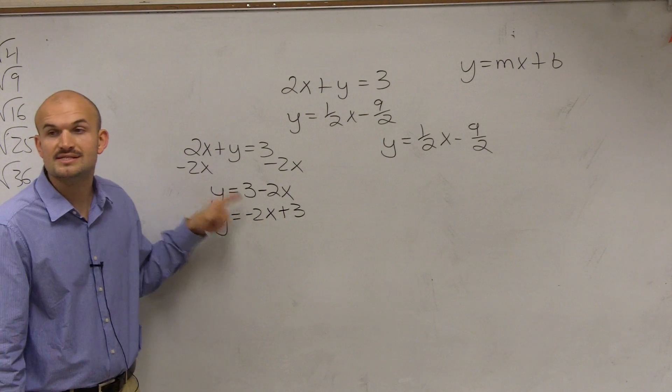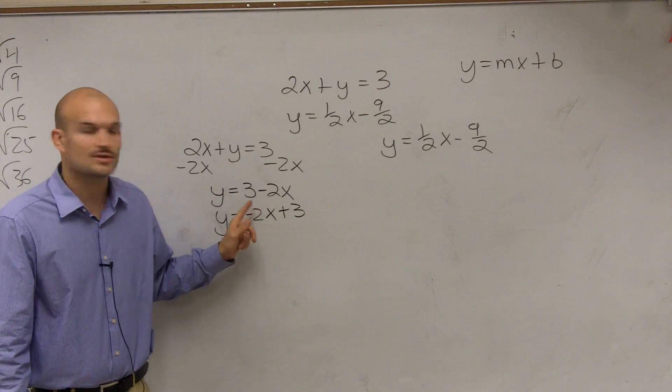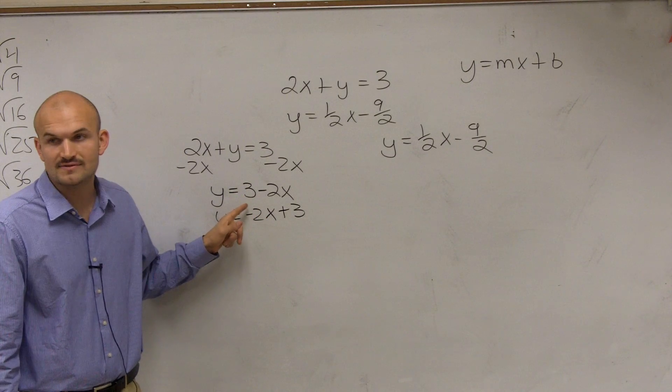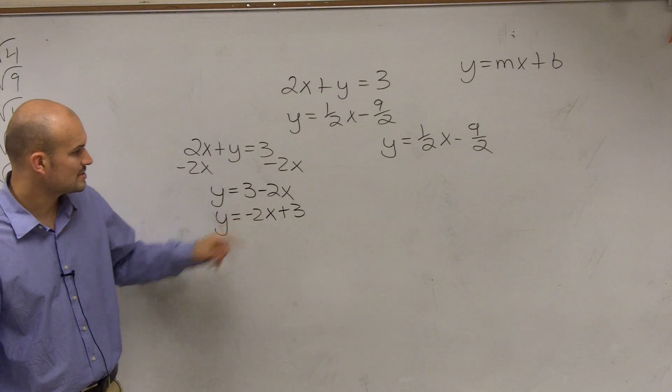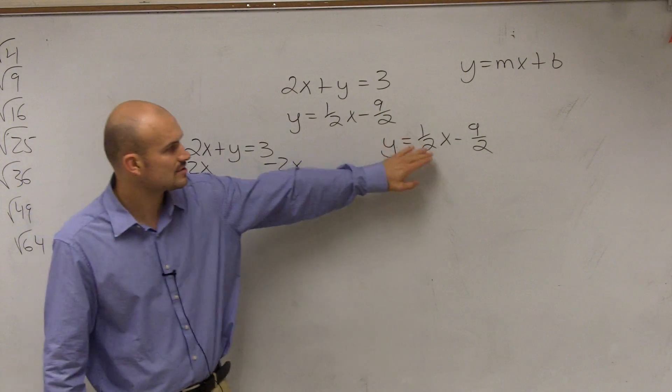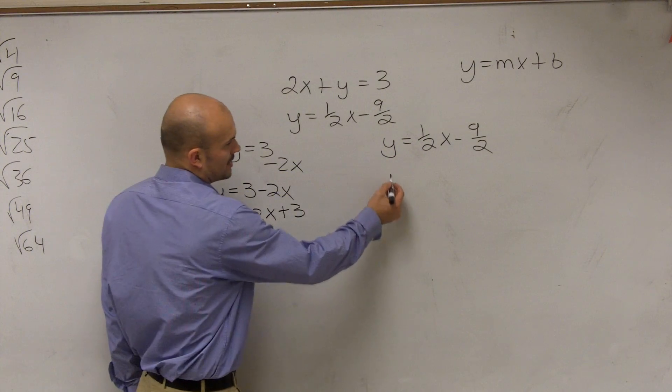Because that 3 is positive, I can write plus 3. The sign in front is going to tell you if it's going to be positive or negative. So there's no negative sign in front, so it's a positive 3. I have y = -2x + 3 and y = 1/2x - 9/2.